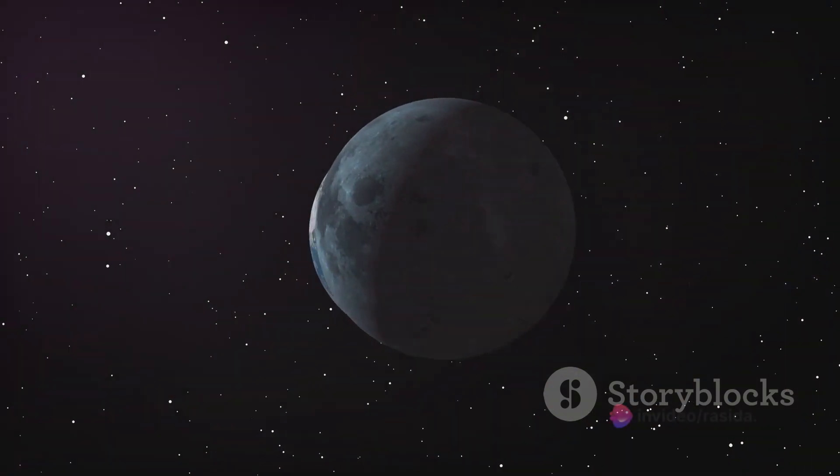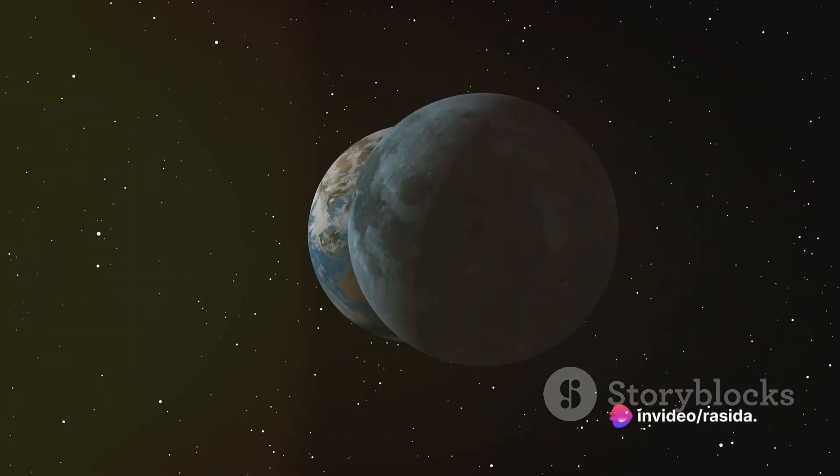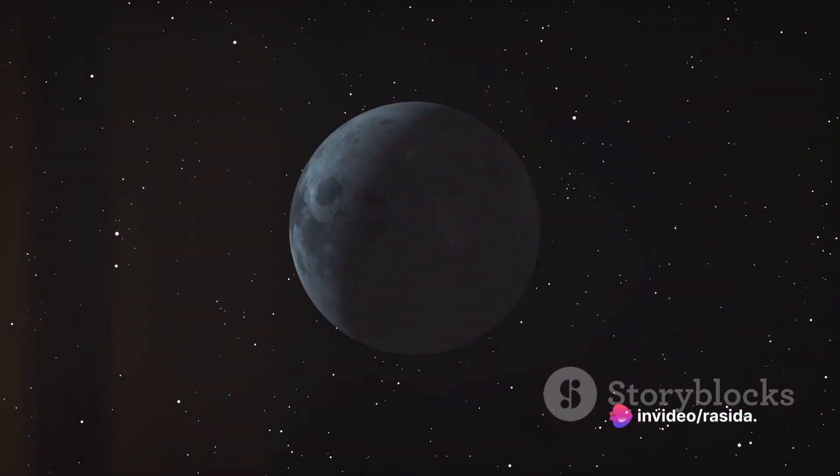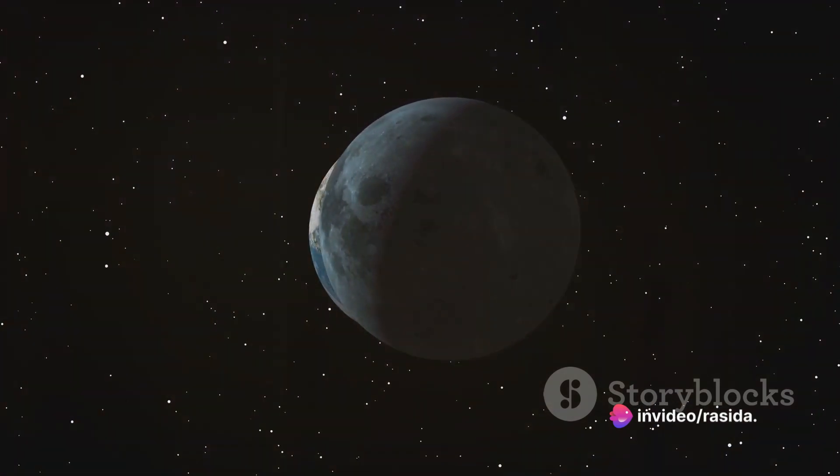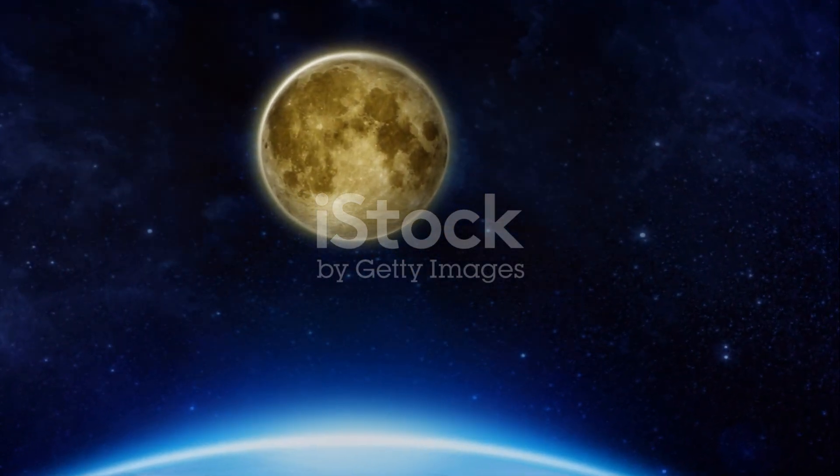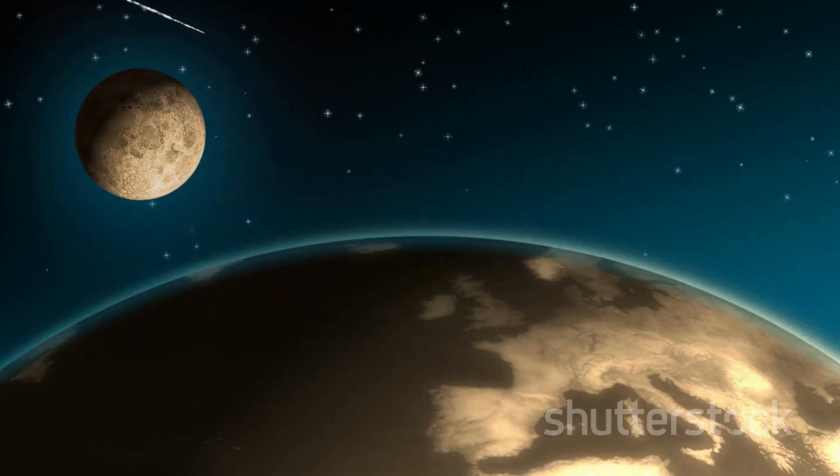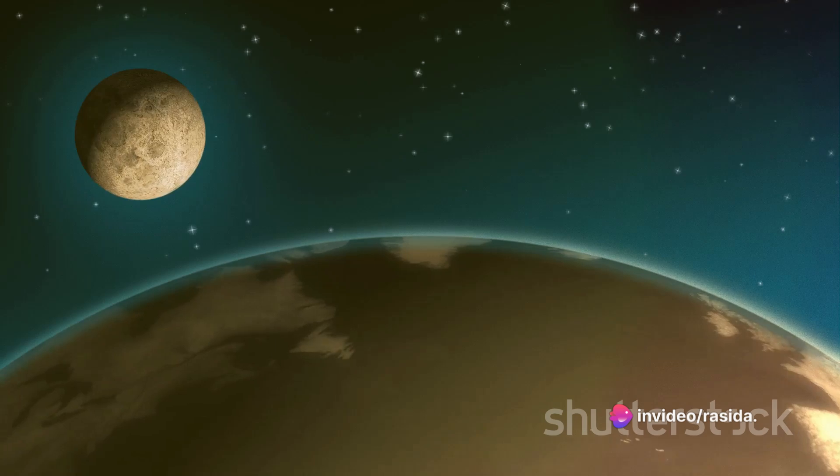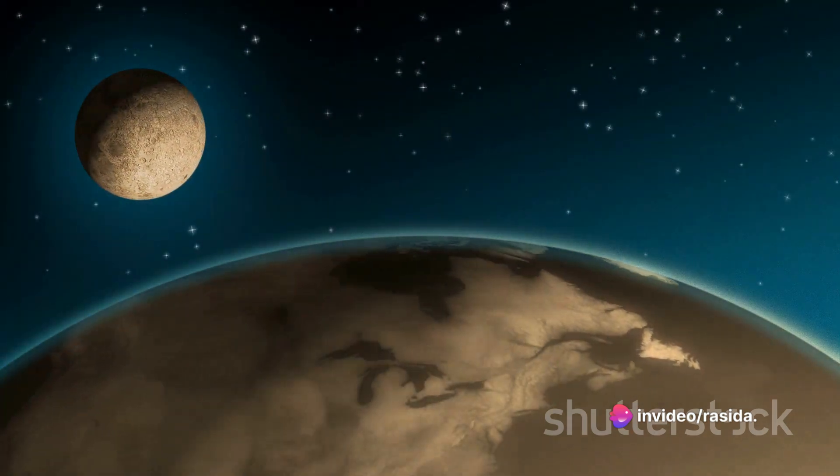The answer lies in the delicate balance of velocity and distance. The moon isn't stationary. It travels around the Earth at a specific speed and at a certain distance. This is the art of balance in action, a subtle equilibrium between the Earth's gravitational pull, the moon's velocity, and its distance from the Earth.